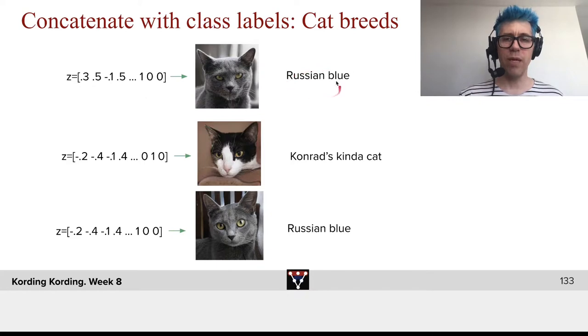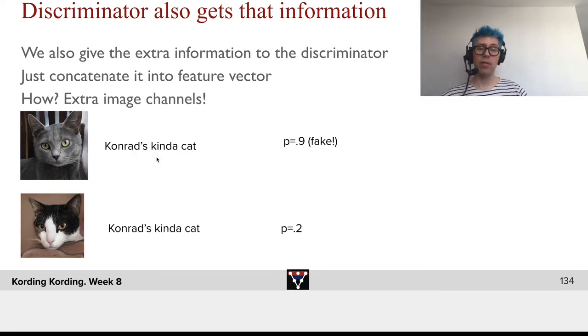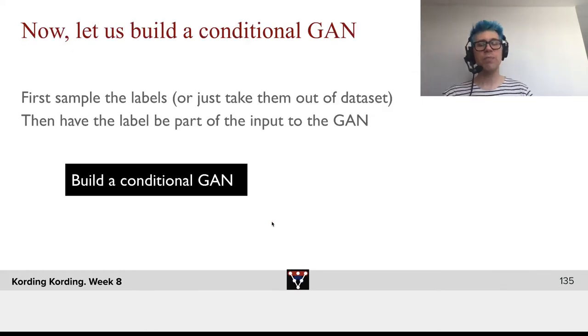We have different cat breeds. This could be Russian blue cat breed. This is another Russian blue breed. Both of them would be one-hot encoded, maybe as [1,0,0] at the end of this. And then here's Konrad's kind of cat, which would be like [0,1,0], and so on. There would be different cat breeds here. Now the discriminator, importantly, needs to get that same information. If the discriminator gets this information - here's the image, and the label is that it's Konrad's kind of cat - the discriminator would say, no, that's definitely not. Whereas here, Konrad's kind of cat, the probability that it's fake would be much lower. Let's build a conditional GAN. First, sample the labels, or just take them out of the data set, and then have the label be part of the input to the GAN.